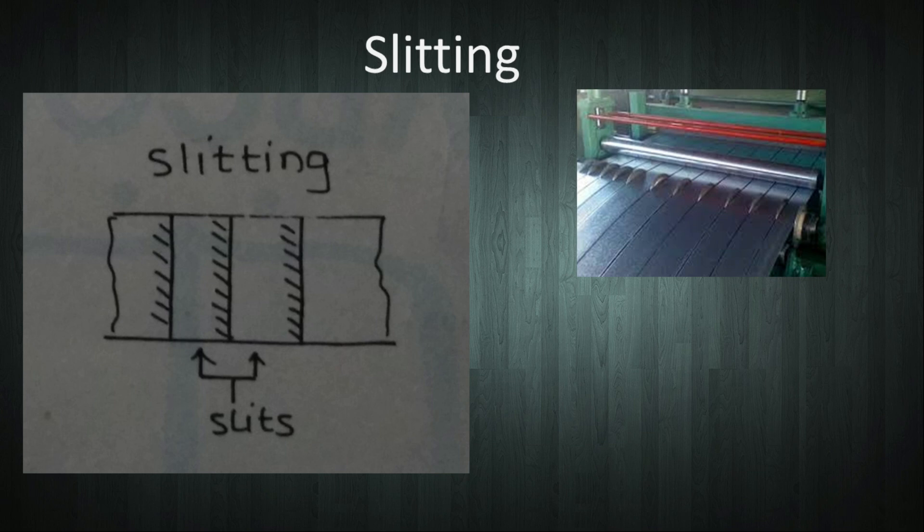The next operation is slitting. Slitting means making small slits in sheet metal as shown in the figure. Here, the sheet is not cut apart, so no scrap is produced. You can see the slitting operation in the image.